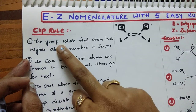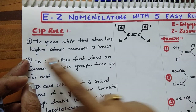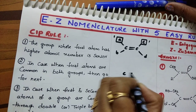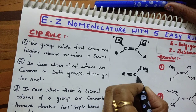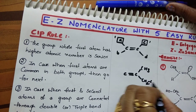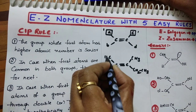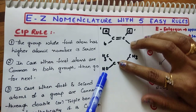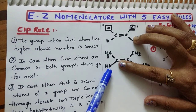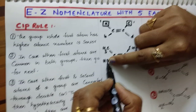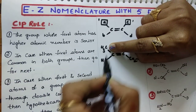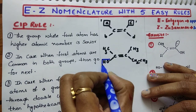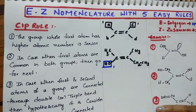Rule number 1: The group whose first atom has a higher atomic number is the senior group. Suppose 2 groups are there — see this example. To this carbon, 2 groups are linked: one is CH3 and another one is OH. Carbon is linked here and oxygen is linked there. Carbon's atomic number is 6 and oxygen's atomic number is 8. So oxygen is having the higher atomic number, therefore OH is the senior group. This is rule number 1.